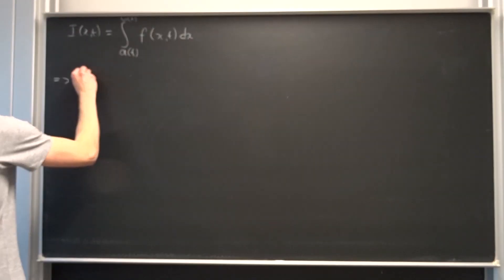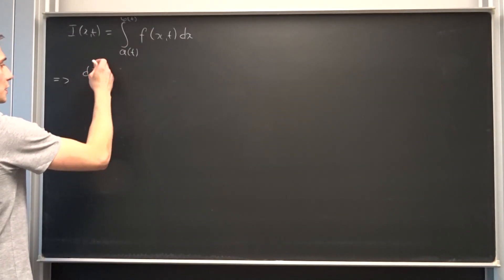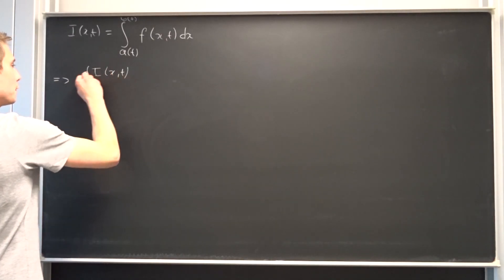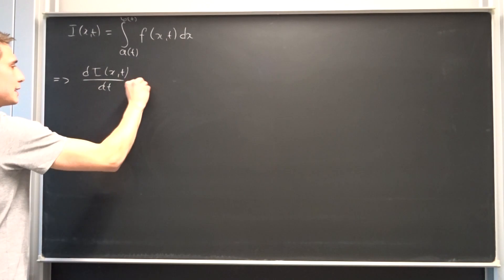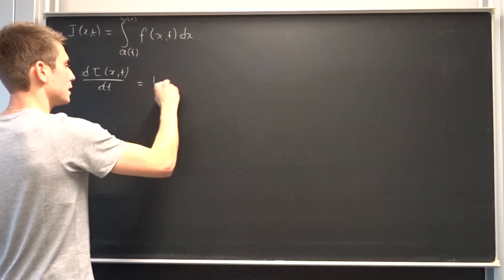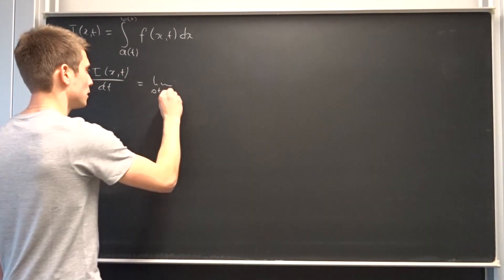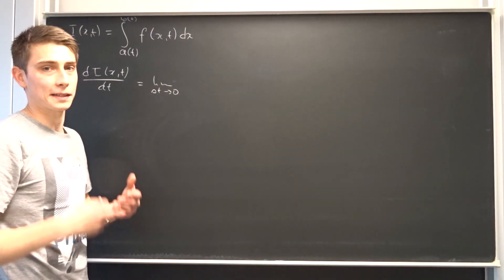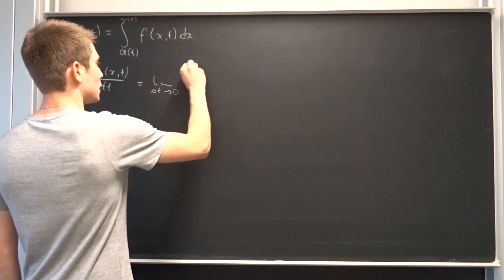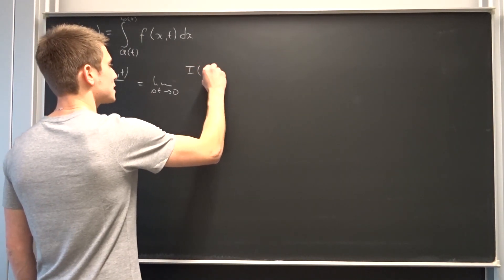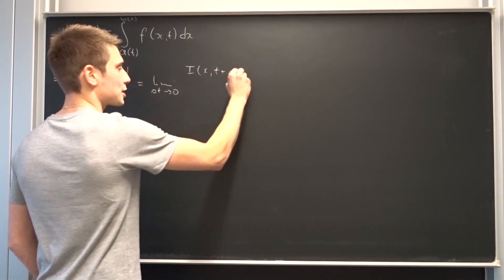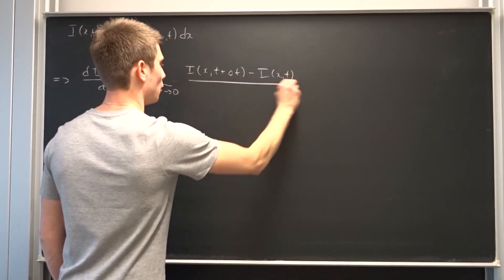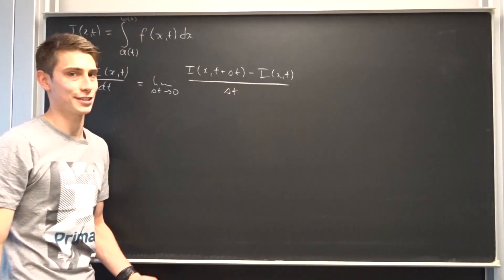So we are going to find out what dI/dt is. This is equal to the limit as some small change in t, delta t, approaches zero of: I in terms of x and t plus delta t, minus I of x and t, over delta t.